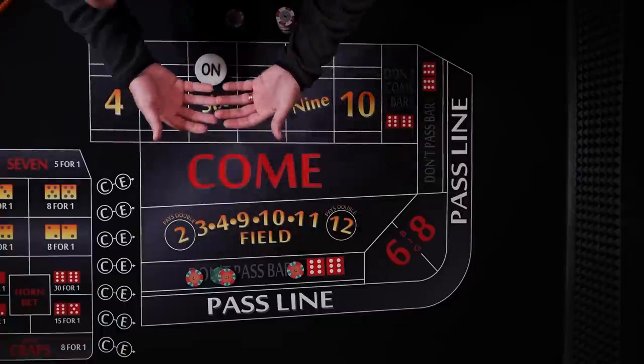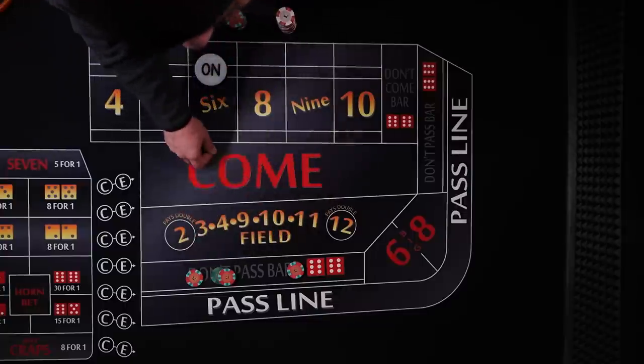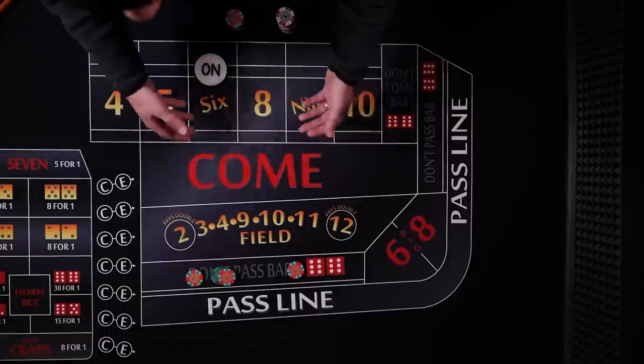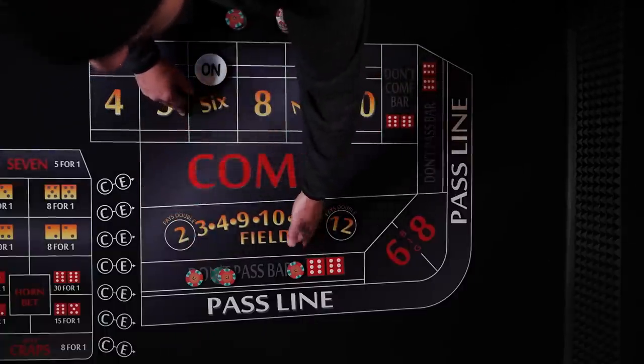But when you're laying odds and the 7 is showing up consistently you're going to win a lot faster by laying odds than not laying odds. The reverse is also true. If you're hitting a lot of points you're going to be losing money a lot quicker than if you don't lay odds.